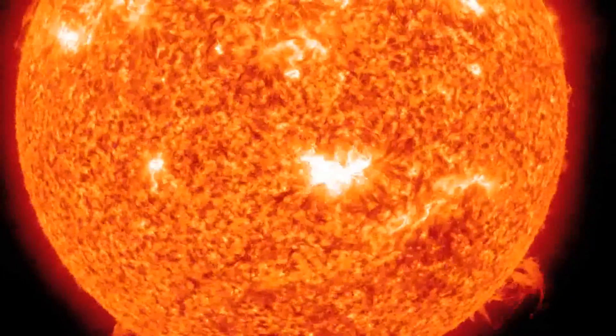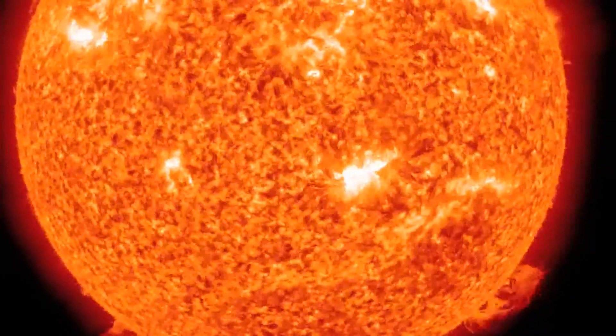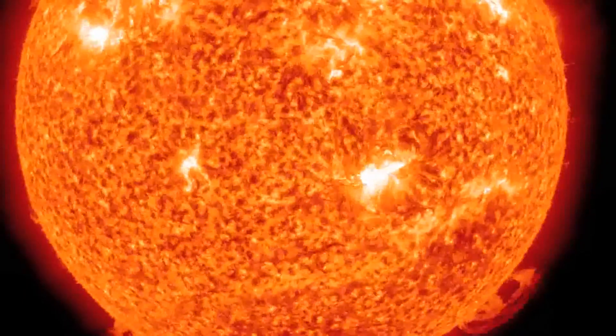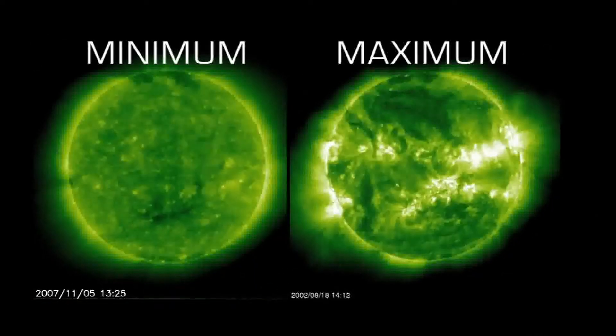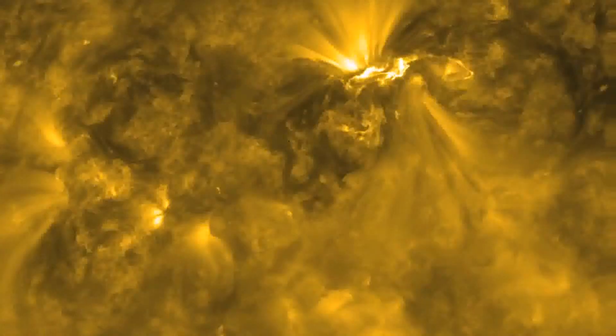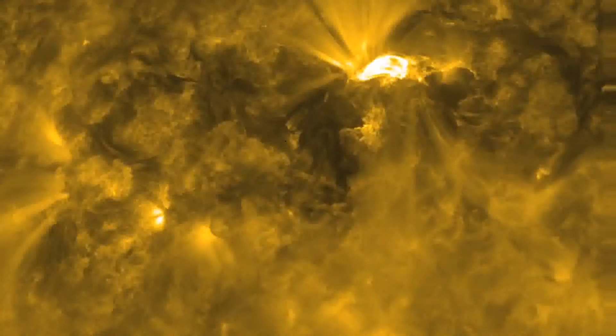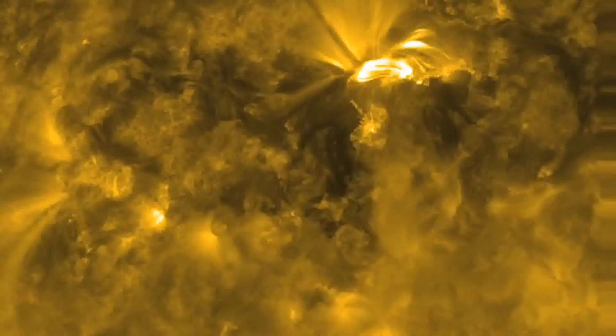Solar flares may seem like faraway events, but they can damage satellites and even ground-based technologies and power grids. Every 11 years, as the sun reaches its maximum activity, they become bigger and more common, and that increases the chances that one will significantly affect Earth.